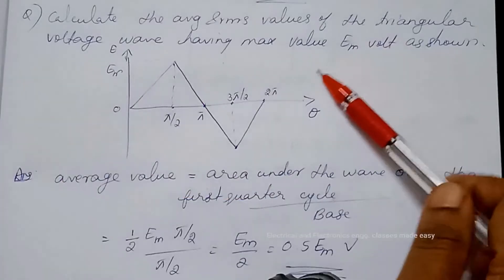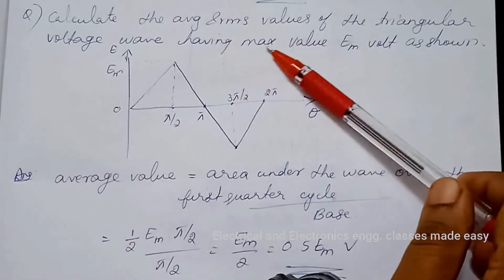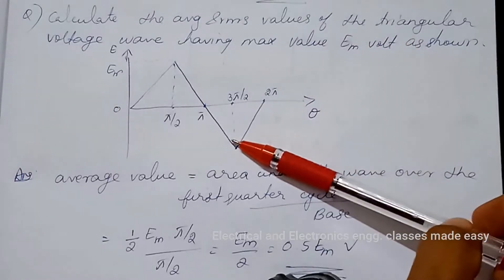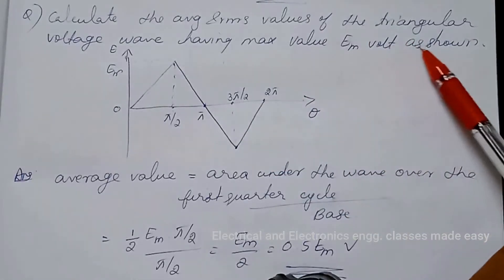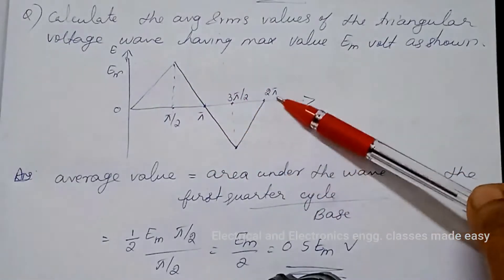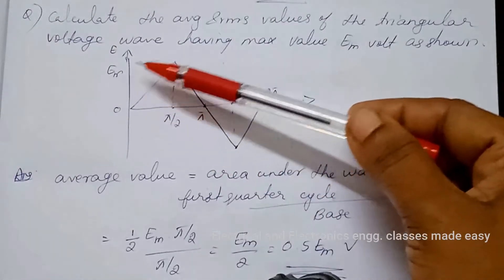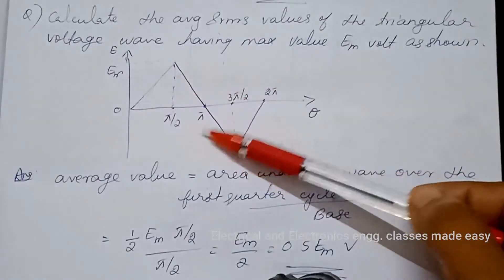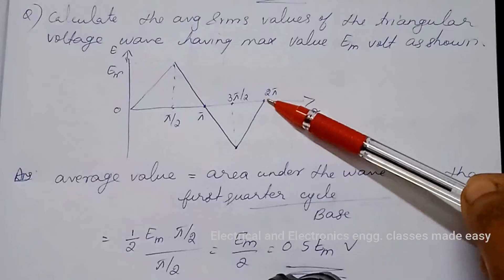Let us do another problem. Calculate the average and RMS values of the triangular voltage wave having maximum value em volt as shown. This is the given triangular voltage wave. em is the maximum value and 2 pi is the time period.